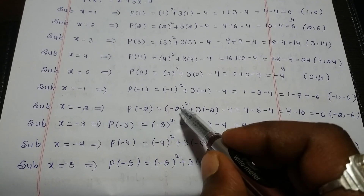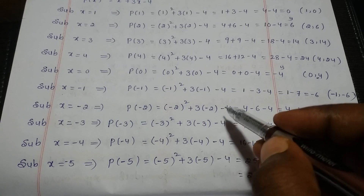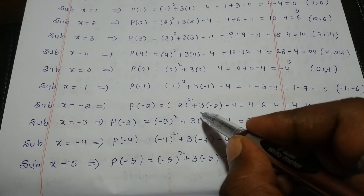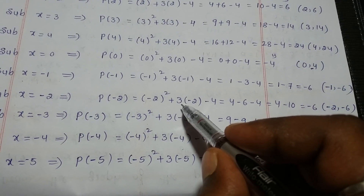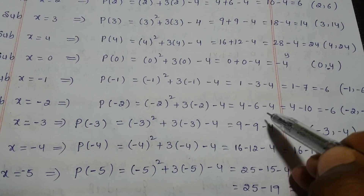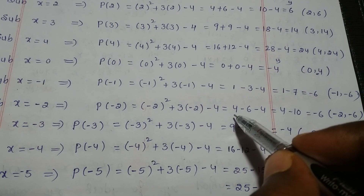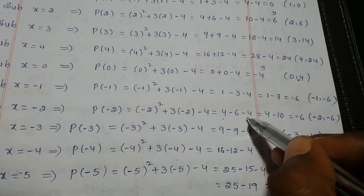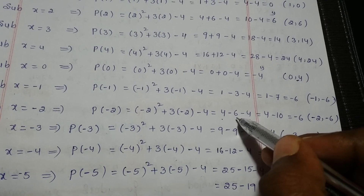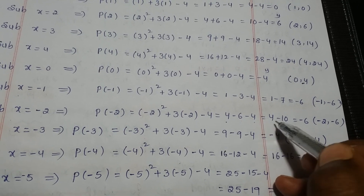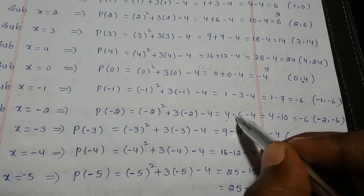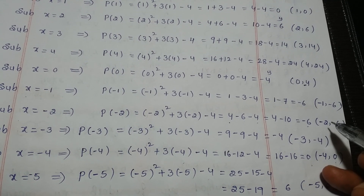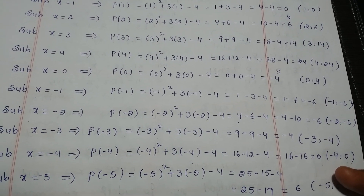Substituting x is equal to minus 2: minus 2 square plus 3 into minus 2 minus 4. Minus 2 square is 4, plus into minus is minus, so 3 into 2 is 6, minus 4. Here one positive value and two negative values: add 6 plus 4 is 10, put the negative sign, so 4 minus 10 is minus 6. The point is minus 2 comma minus 6.